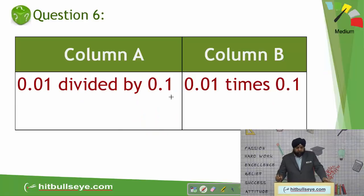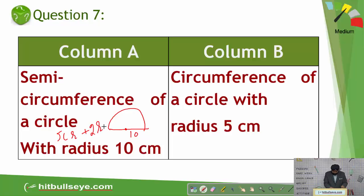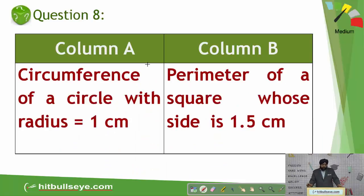Next question — Column A, Column B — a simple calculation you can solve. Next: semicircumference of a circle with radius 10. The semicircumference formula is pi*r plus 2r; with radius 10 that is 10*pi plus 20. Column B is the circumference of a circle with radius 5, which is 2*pi*r = 10*pi. So Column A quantity is 10*pi plus 20 and Column B is only 10*pi, so Column A is obviously greater — first option. The following question is also simple; you just need to know the circumference of a circle and the formula for the perimeter of a square.